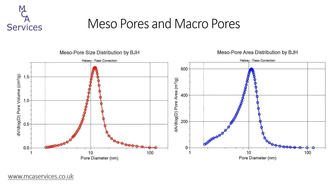Moving to the higher relative pressure end of the isotherm, we can obtain mesopore size, volume, and area information, and this can also be extended into the macropore range, but this particular sample has a well-ordered, distinctly mesoporous pore structure. We've applied the BJH model — named after its creators Barrett, Joyner and Halenda — to the adsorption isotherm. The plot on the left shows the pore size distribution according to pore volume: the sample is distinctly mesoporous, with pores in the range of 3 to 35 nanometres diameter and the peak maximum occurring at 12 nanometres. The plot on the right shows the pore area distribution. The plots look quite similar, but the pore area plot does show a greater skew towards smaller pores, which is reasonable since for a given pore volume, smaller pores will contribute more to total pore area than larger pores.